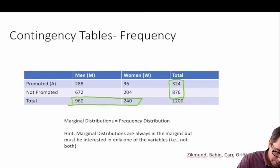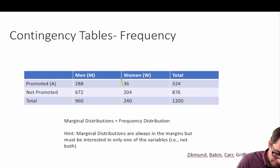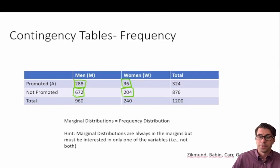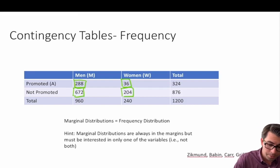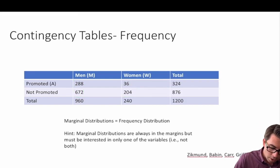The values inside the body of the table are called our joint distributions. A helpful hint to remember the difference: marginal distributions always appear in the margins of the table.